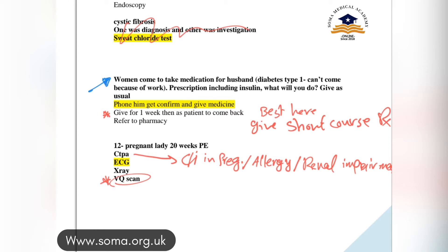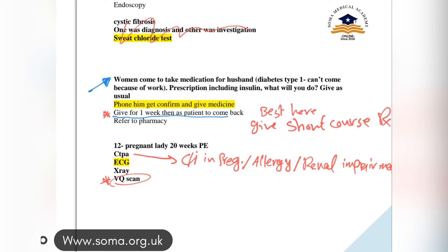His wife came asking about his medication. Do not stop the medication and do not refer to the pharmacy. The best answer is to give a short course treatment — one week — and ask the patient to come back for follow-up next week.